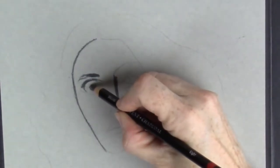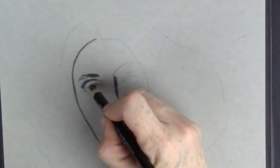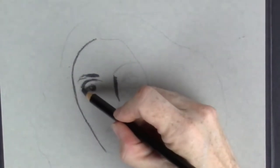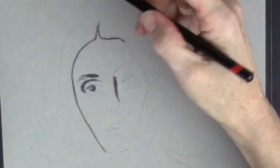But to begin with, we're just getting the facial features in, and I'm using a surface of Strathmore mixed media paper, a grey toned paper.